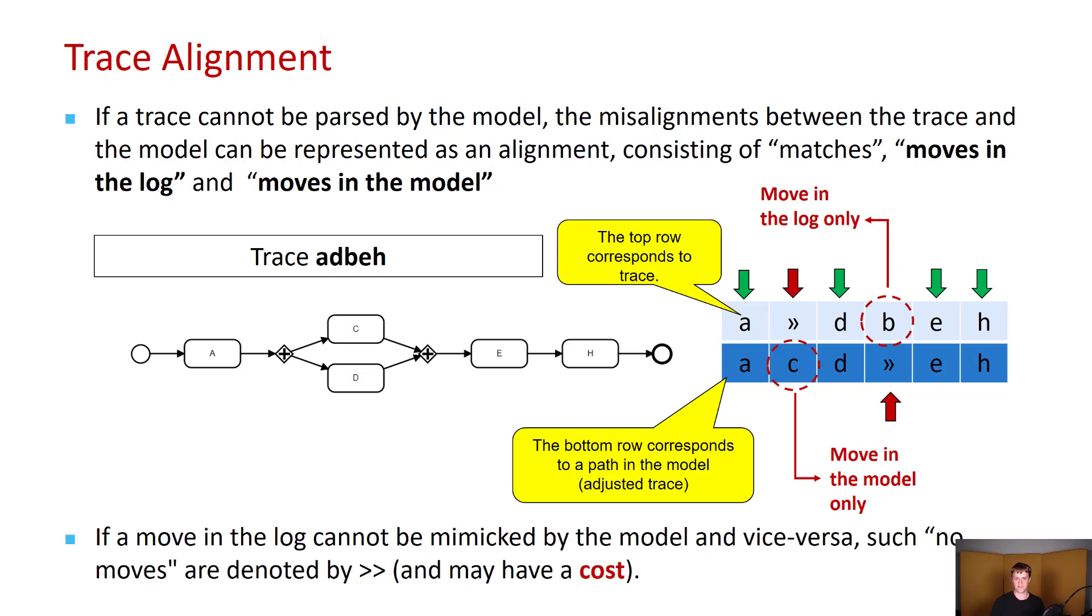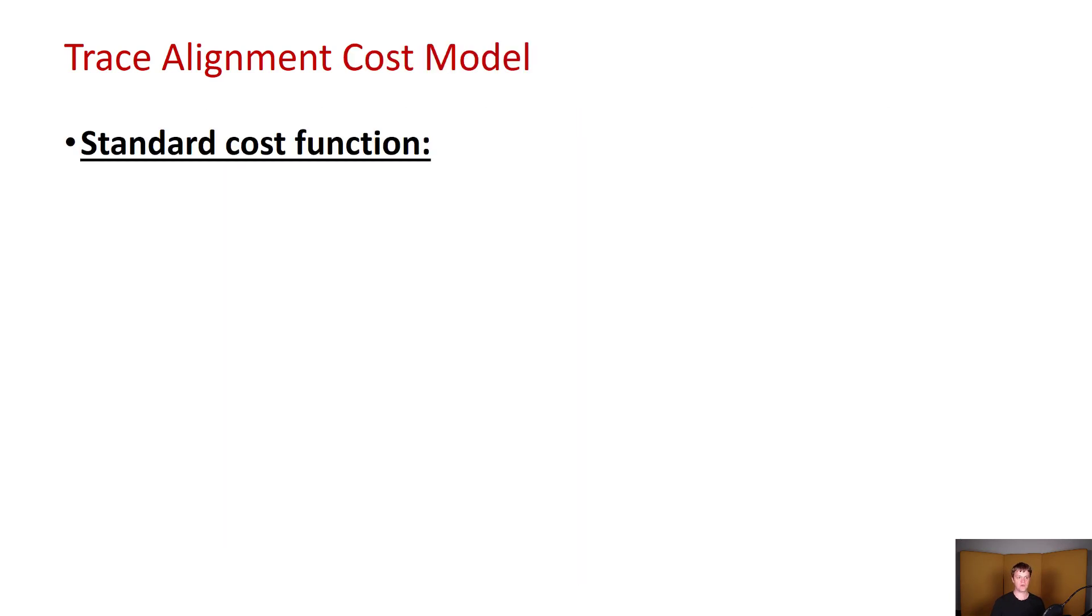Now note that the way we have represented things here is that if a move in the log cannot be mimicked by the model, and vice versa, then such no moves are going to be denoted by double greater than signs. And those can have a cost. So the standard cost function is going to be move in trace only, the cost is 1. Move in model only, the cost is also 1. Move in both, then the cost is going to be 0.